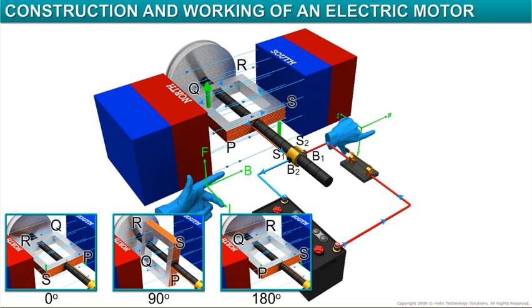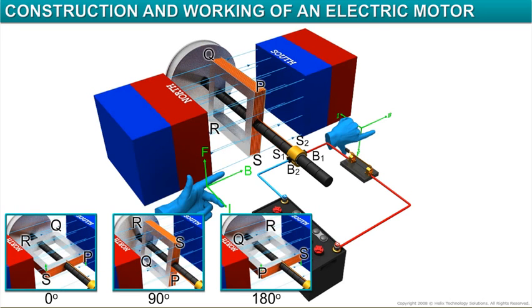This reverses the current through the coil. The current now enters the coil through S2, passes along S, R, Q, P and leaves the coil through S1. The torque acting on the coil causes PQ to go up and RS to go down.